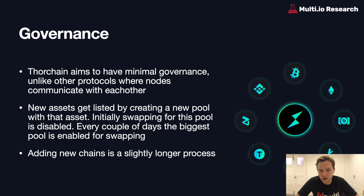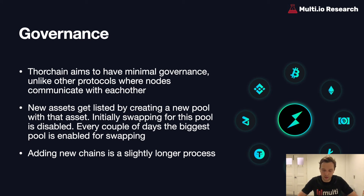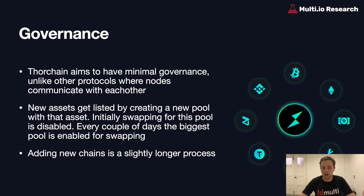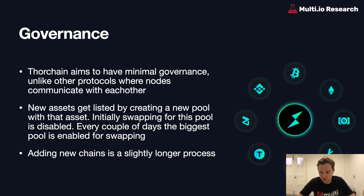ThorChain aims to have minimal governance, unlike other protocols where nodes communicate and coordinate. New assets get listed by creating a new pool with that asset. For example, if there's an ERC20 token without an existing liquidity pool on ThorChain, you can send this asset in and it becomes a bootstrapped pool. This bootstrapped pool isn't open for swapping yet, but assets can be deposited. Every couple of days, the biggest or deepest bootstrapped pool is enabled for real trading, ensuring the most liquid assets are constantly listed and that ultimately any asset can be listed.